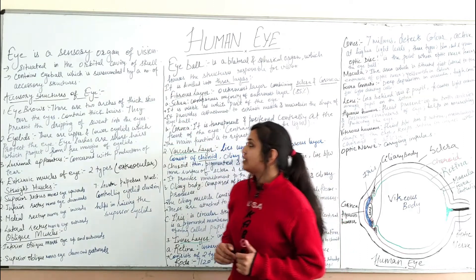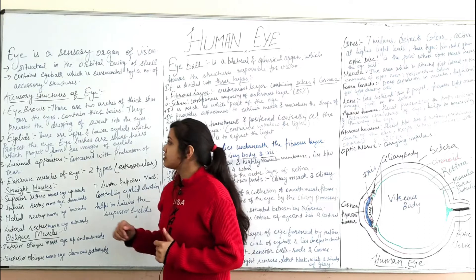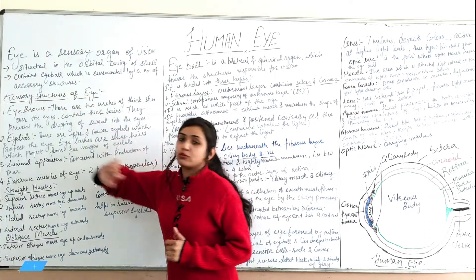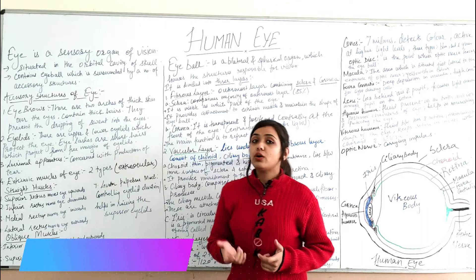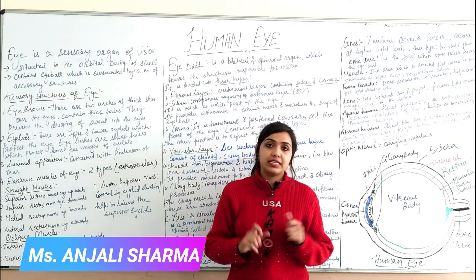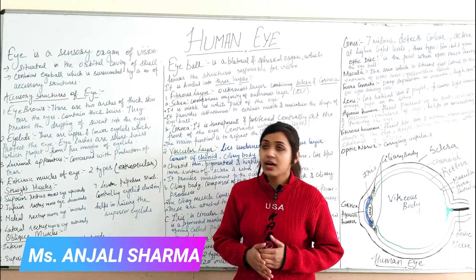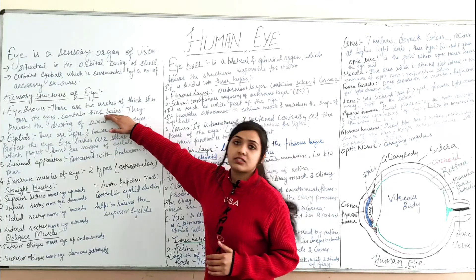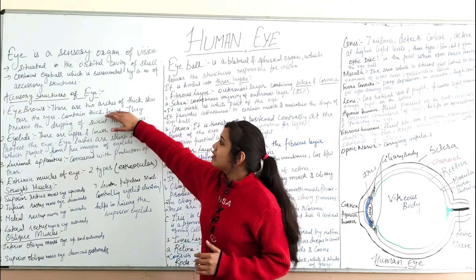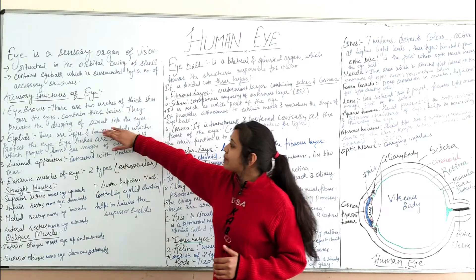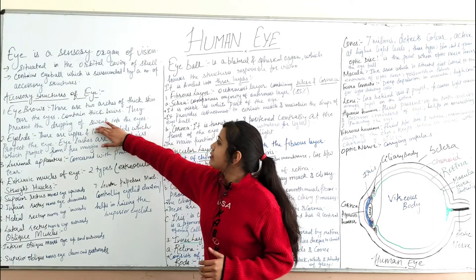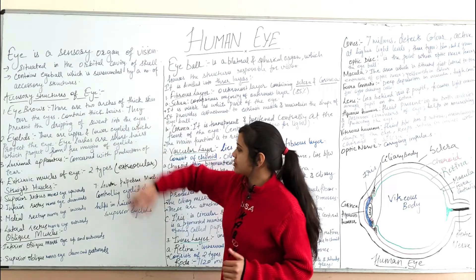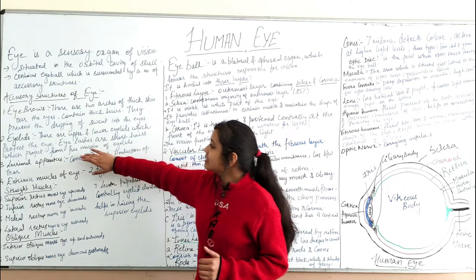Let's discuss the accessory structures one by one. The first structure is the eyebrows. Eyebrows are two arcs of thick skin present over the eye, containing thick hairs. Their function is to prevent the dripping of sweat into the eyes, making them very useful structures.